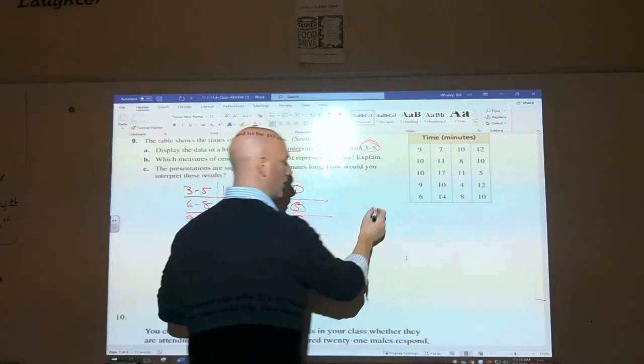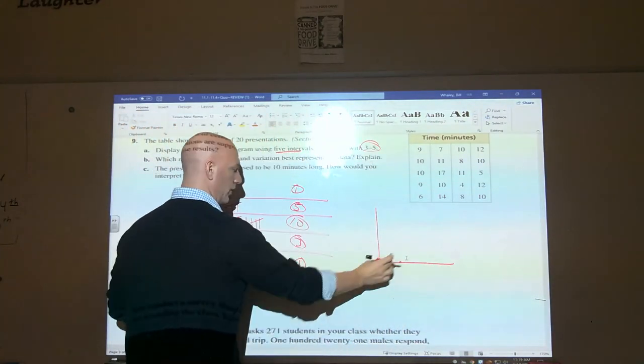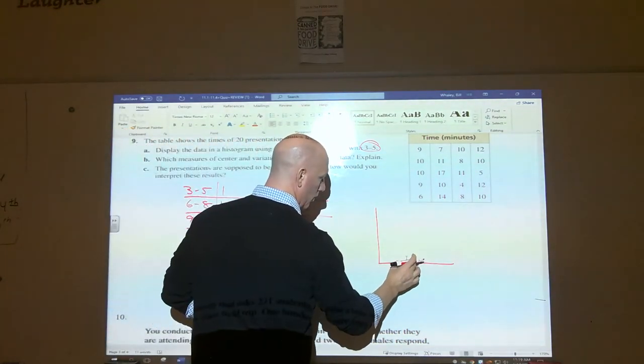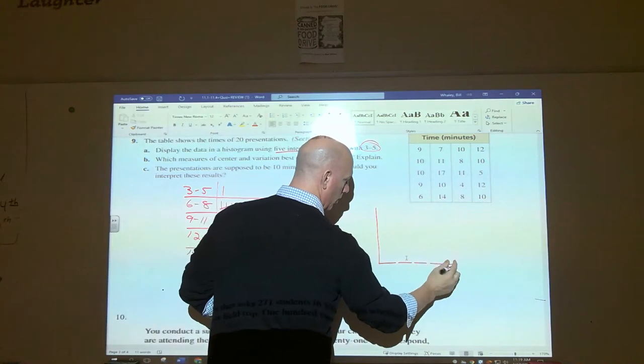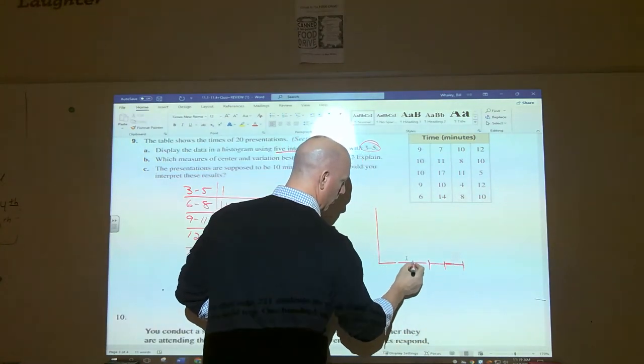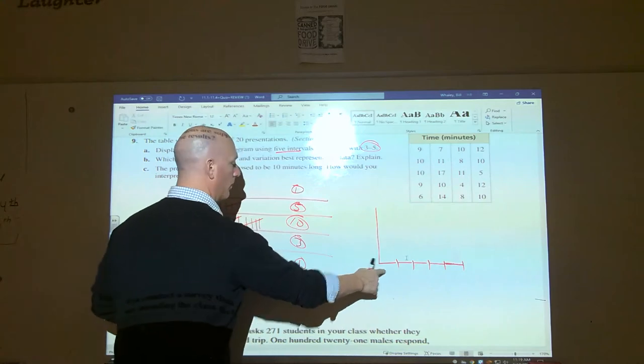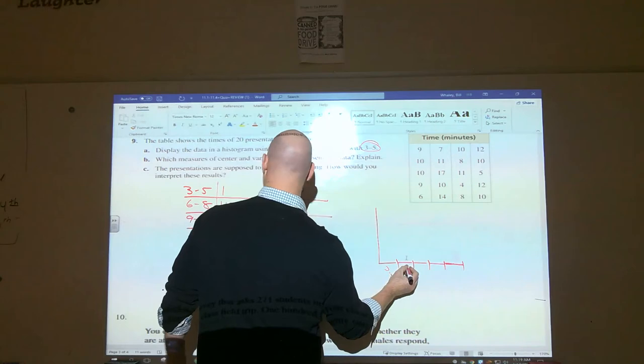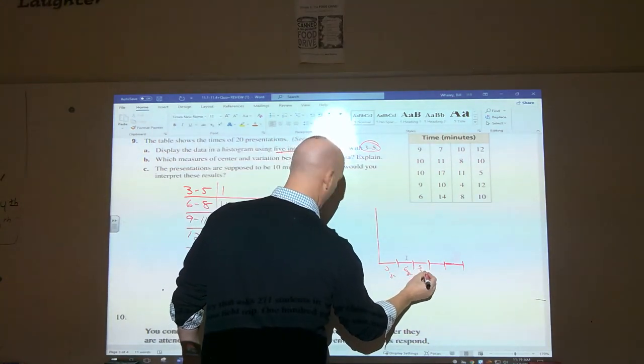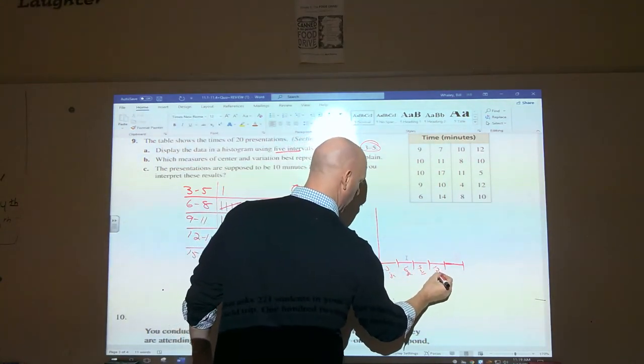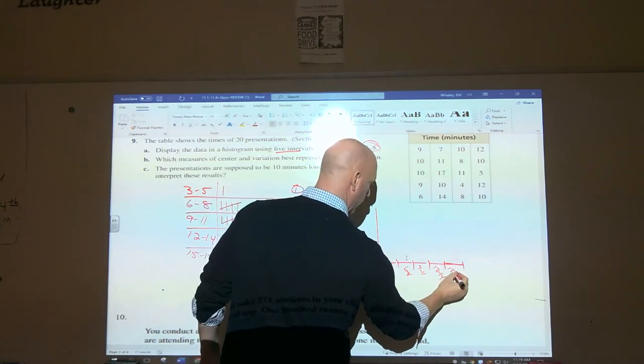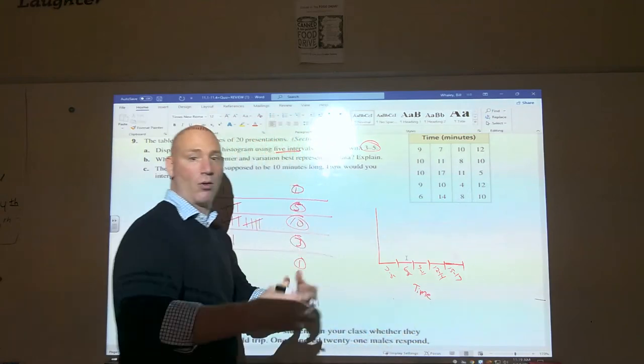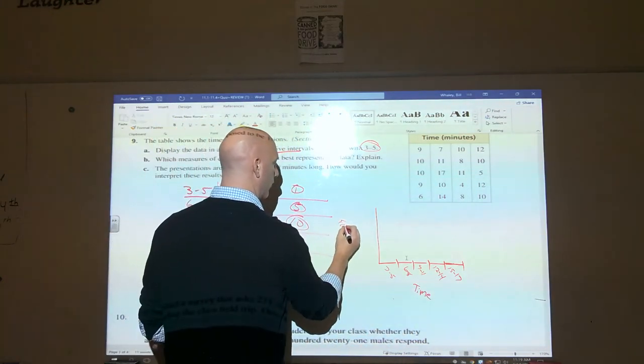Make sure these are all even, so I'm gonna have 1, 2, 3, 4, 5, and then this will be the categories: 3 to 5, 6 to 8, 9 to 11, 12 to 14, 15 to 17. And this is time or minutes, how long each presentation was. This is our frequency.